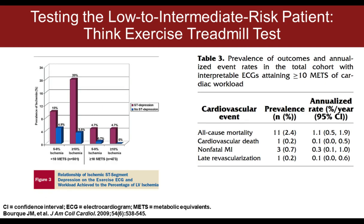We have very few 1A indications in cardiology — most are 1B or 2A. Exercise stress testing in the low-to-intermediate risk patient is a 1A indication, so you can't go wrong starting with that test if your patient can exercise. Data from the University of Virginia shows that a patient who goes 10 minutes without chest pain and without ischemic EKG changes has a very low likelihood of ischemia and a very low mortality.